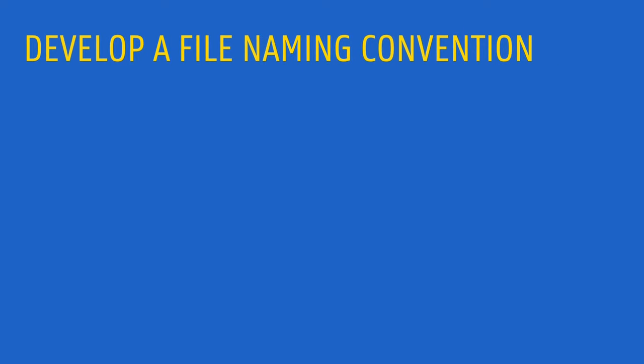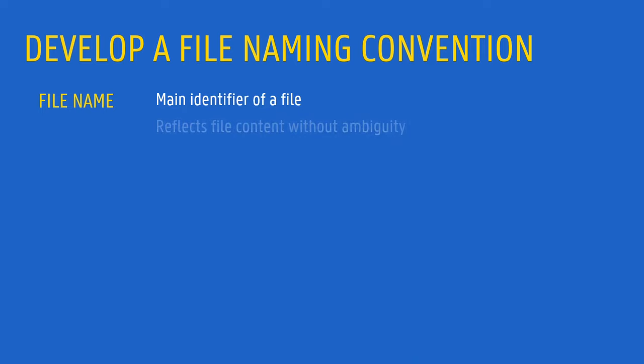Starting with file naming conventions. The name will be the main identifier of a file, and should help you to identify what the content of the file is at a glance. To design a file naming strategy, think about the files you expect to generate during your project and what are their characteristics.